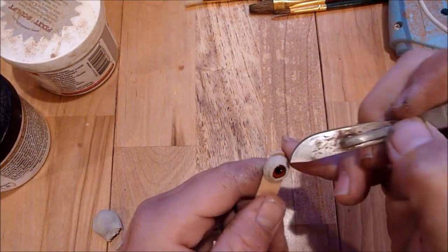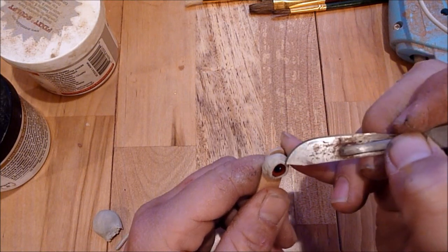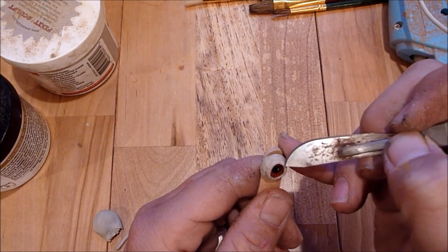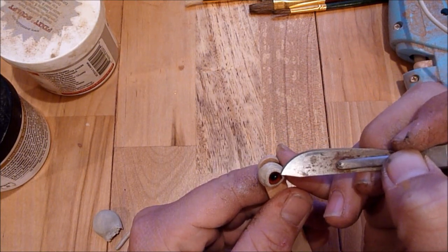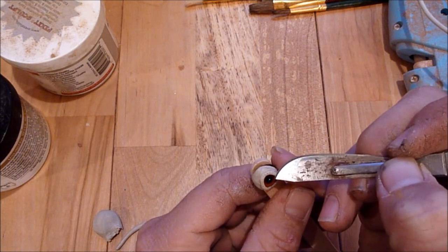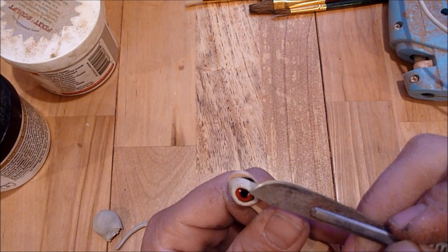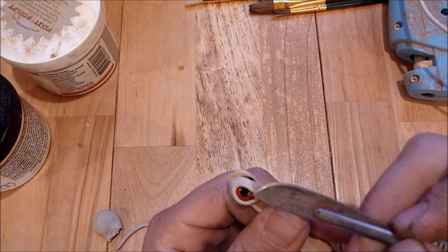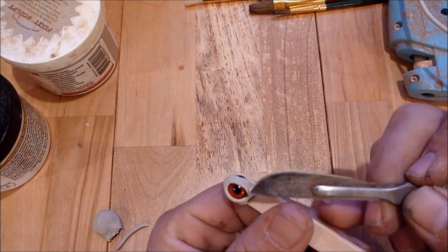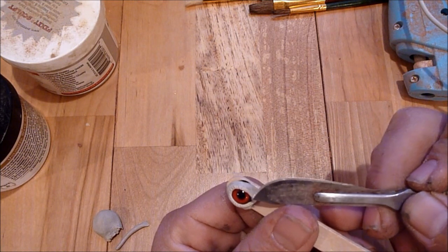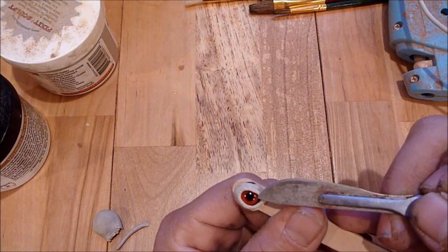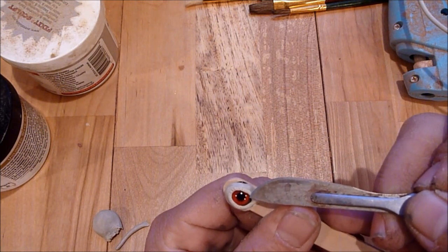I use this color epoxy sculpt just because it's a good base color and then all I gotta do is just go in and actually paint these. I like to use the pan pastels just because they're very light powders that can mix very easily.